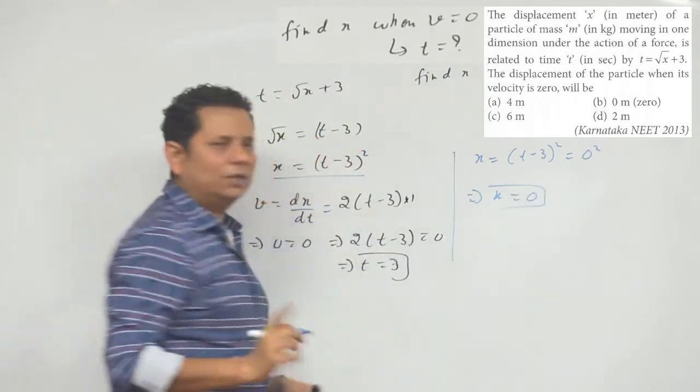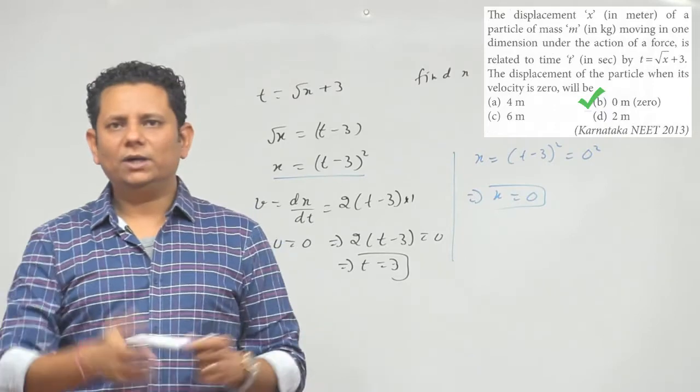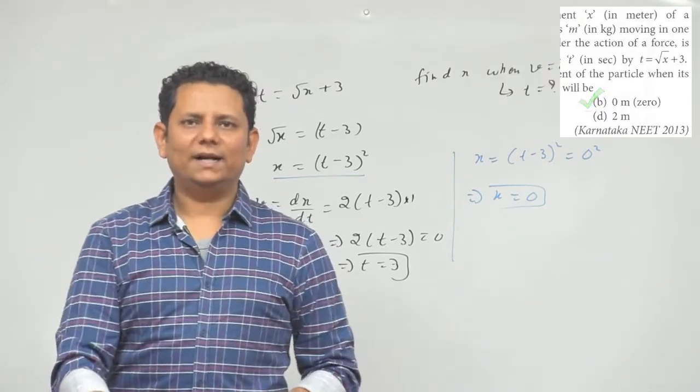So when your velocity is 0, at that time your displacement is also 0; the particle is at the origin. Which means option b would be the right answer.